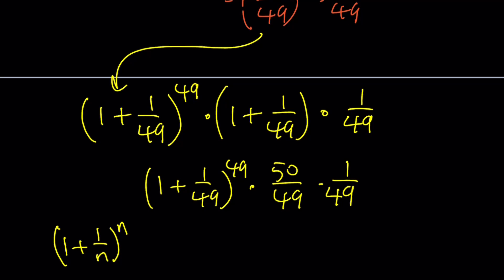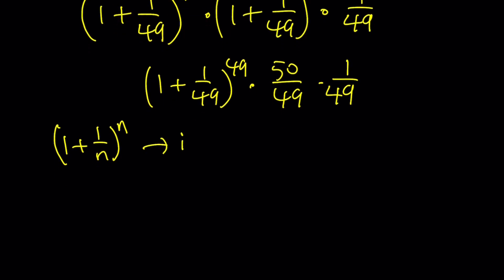Here's what we're going to look at: 1 plus 1 over n to the nth power is always increasing. This is an increasing sequence. Also, there's another important fact: the limit as n approaches infinity of 1 plus 1 over n to the nth power equals Euler's number. This is what makes this sequence very special.